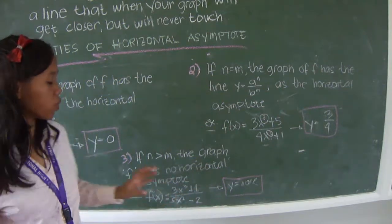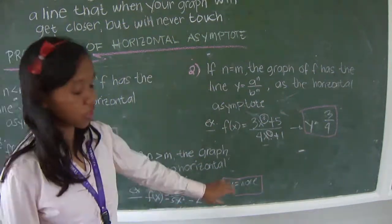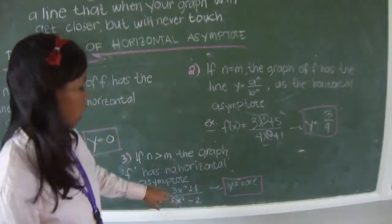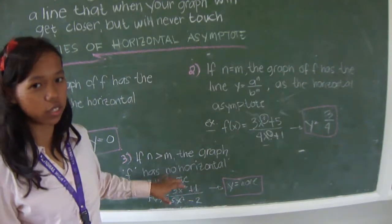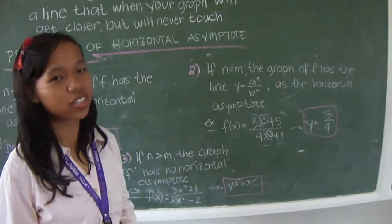For example, f of x equals 3x to the power of 3 plus 1 over 5x to the power of 2 minus 2. There is no horizontal asymptote because the power of the numerator is greater than the denominator. Thank you.